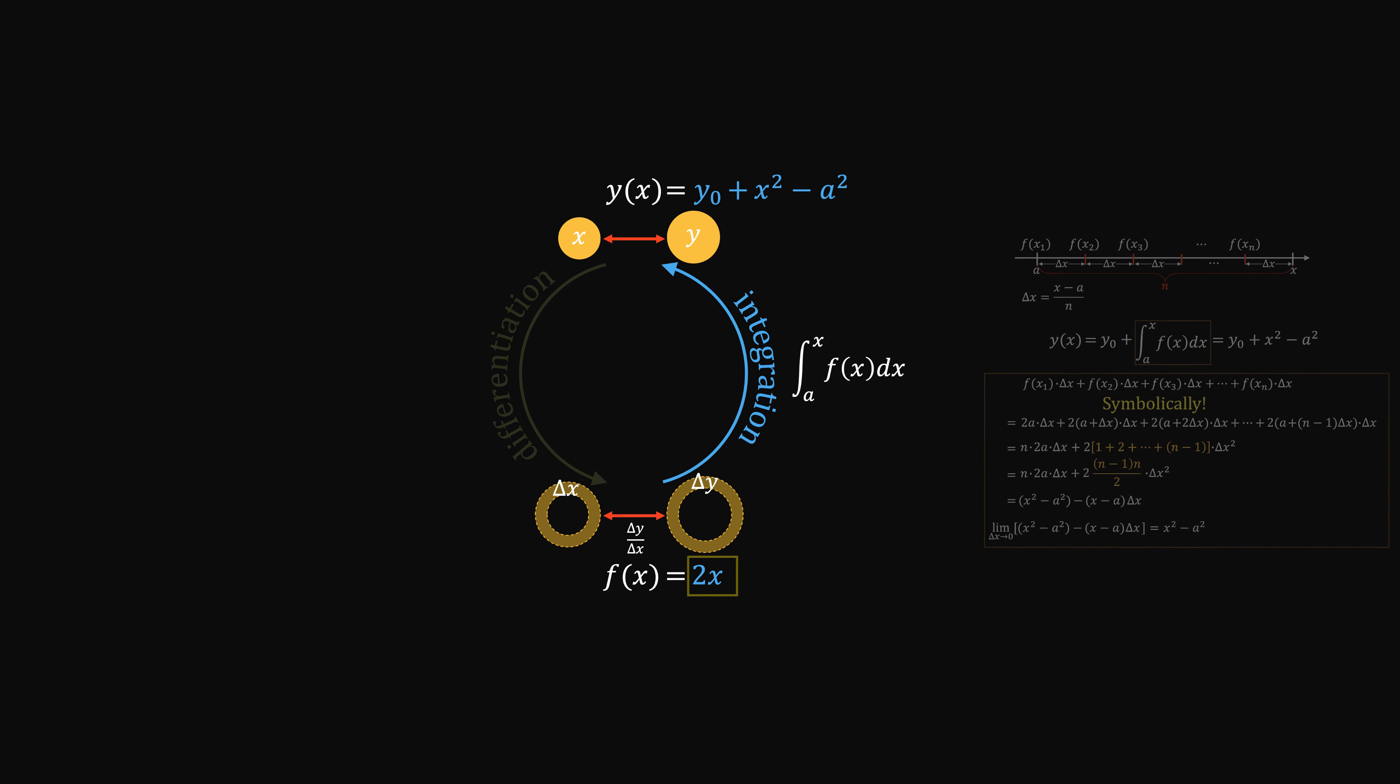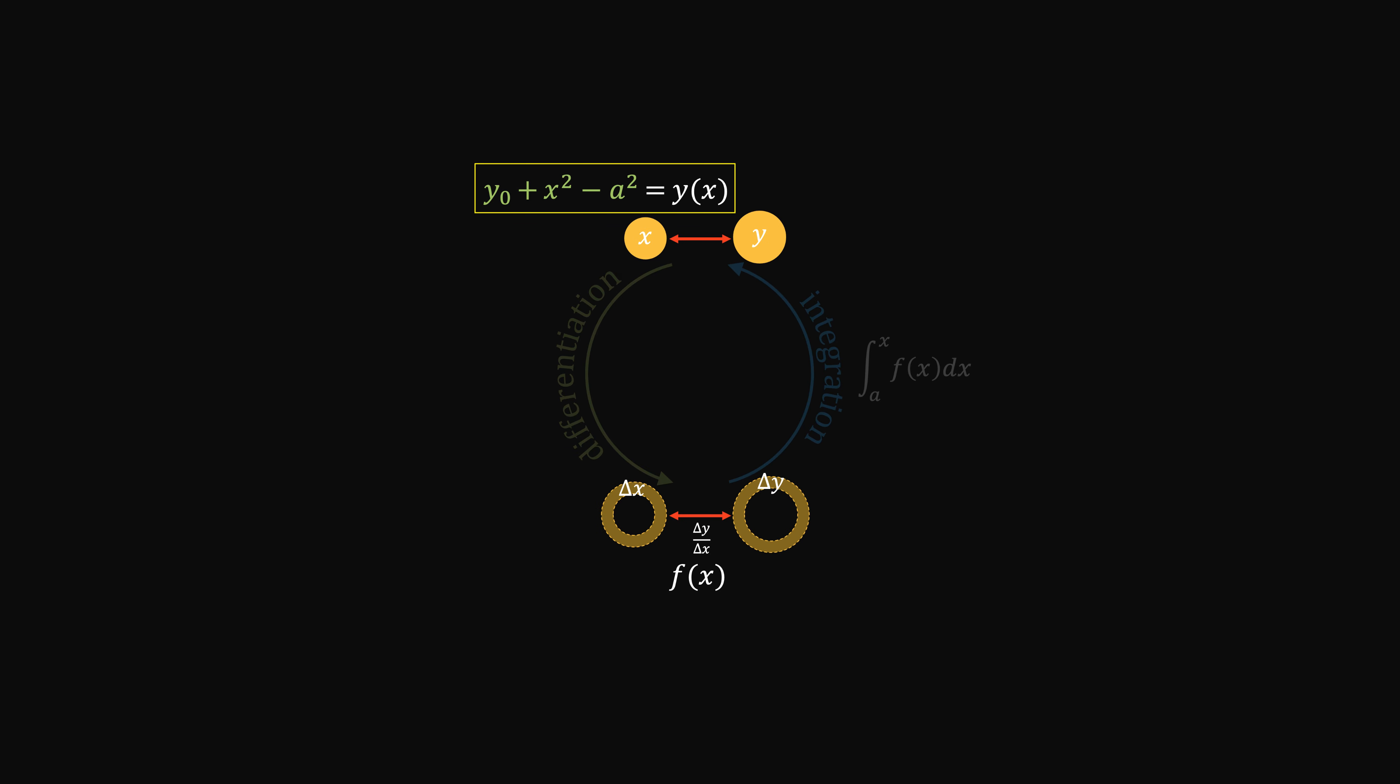On the other hand, if we know the general relationship, you can use differentiation to back out the velocity. So differentiation and integration are the two forces getting from one side to the other.